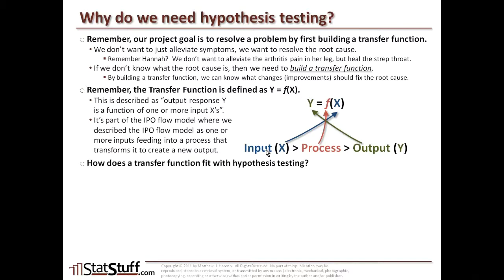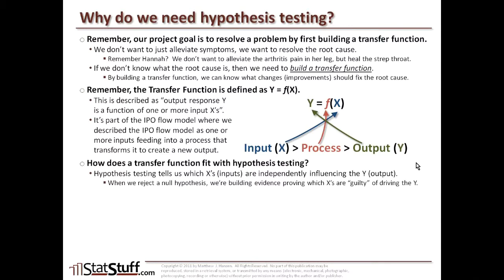How does this transfer function fit with hypothesis testing? Hypothesis testing tells us which of those x's — which of those inputs — are independently influencing the y, the output metric. When we reject a null hypothesis, we're building evidence proving which x's are guilty of driving the y. At the end, we'll compile all the evidence in the improve phase to fix those root causes, knowing from the hypothesis testing which x's are the most critical and where we need to make the biggest changes to affect our output y.